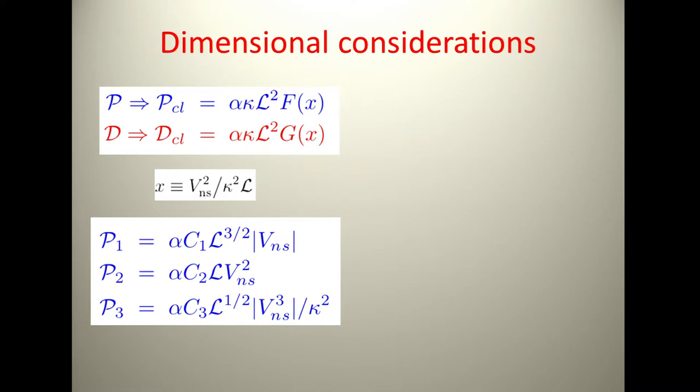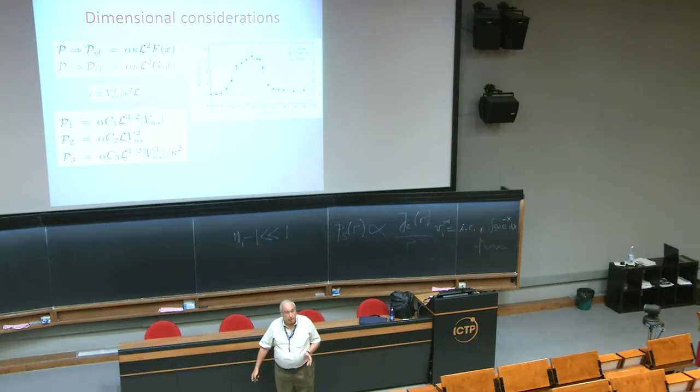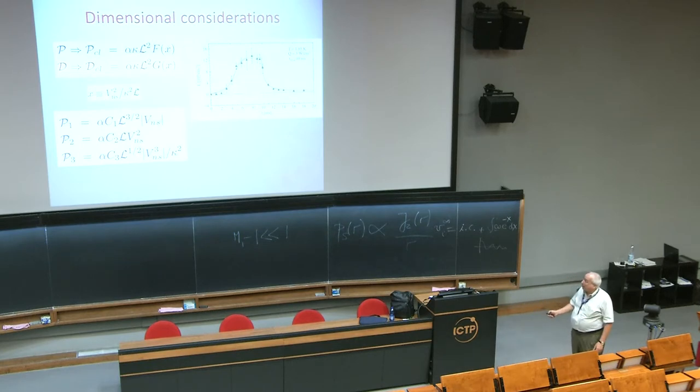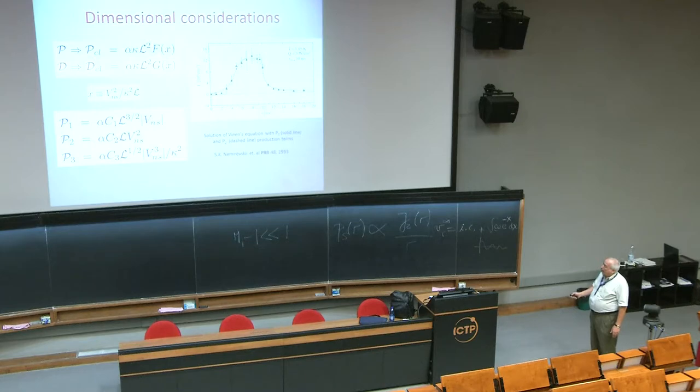People have tried for a long time with experiments on homogeneous flows. Nemirovsky, for example, in 1993 tried to fit experiments. You tried to compare the prediction of the equation with the first form and the second form, and you cannot tell which one is right because the error bars are sufficiently large that both forms agree.